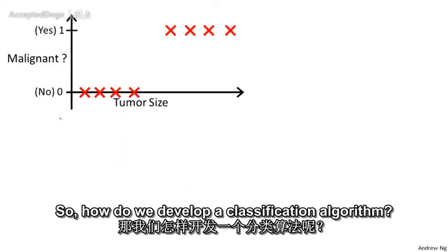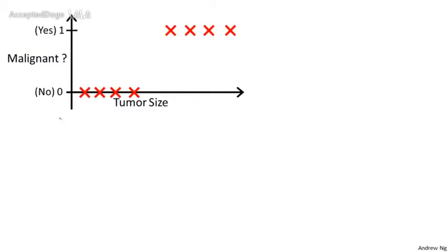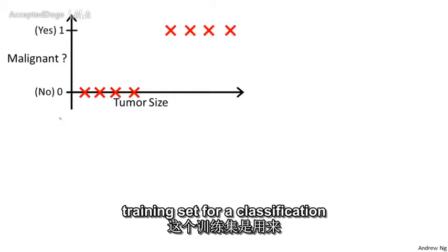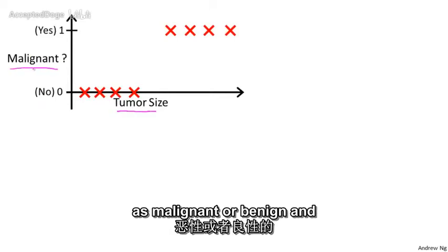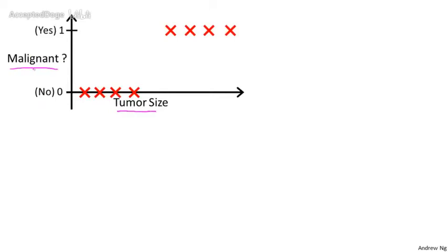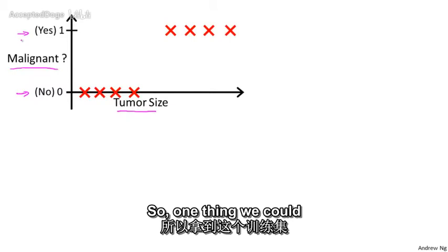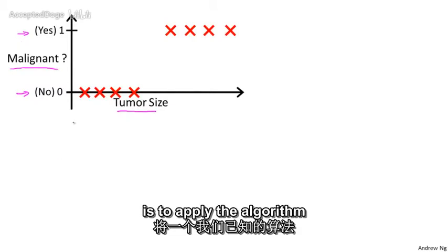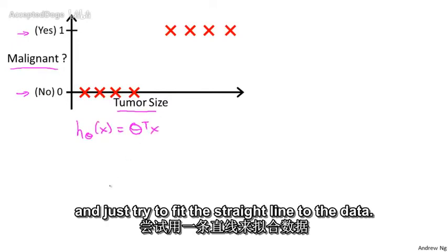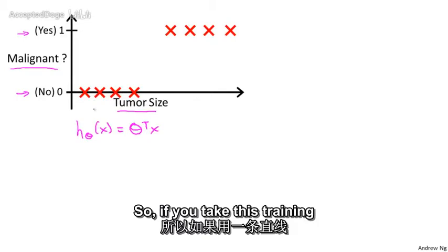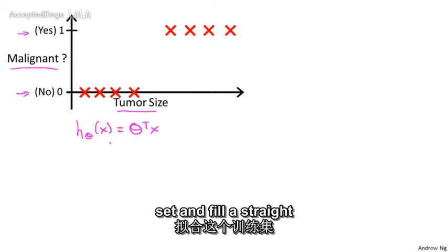So how do we develop a classification algorithm? Here's an example of a training set for a classification task for classifying a tumor as malignant or benign. And notice that malignancy takes on only two values 0 or no, 1 or yes. So one thing we could do, given this training set, is to apply the algorithm that we already know, linear regression to this data set, and just try to fit a straight line to this data.